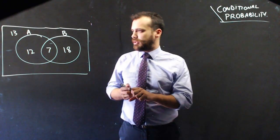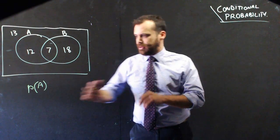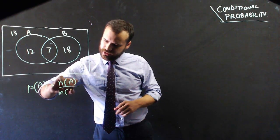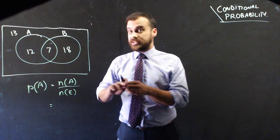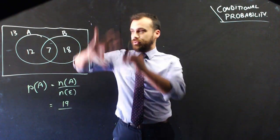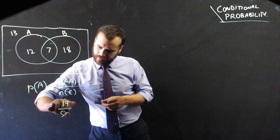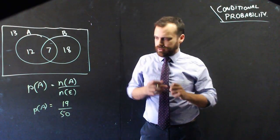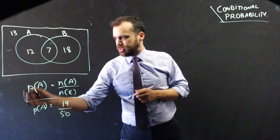If I wanted to find the probability that somebody is in set A, that's going to be equal to the number of people in set A over the size of the universal set. The number of people in set A is the whole circle A, which is 19, out of the whole thing. If you add those up—13, 12, 7, and 18—you get 50. So the probability that they're in set A is 19 out of 50, and here's our formula to do that.